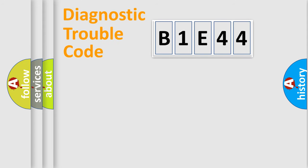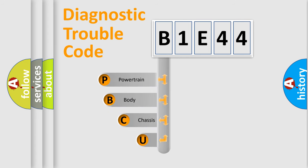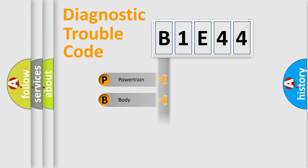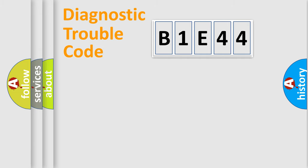Let's look at the history of diagnostic fault code composition according to the OBD2 protocol, which is unified for all automakers since 2000. We divide the electric system of the automobile into four basic units: Powertrain, body, chassis, and network.